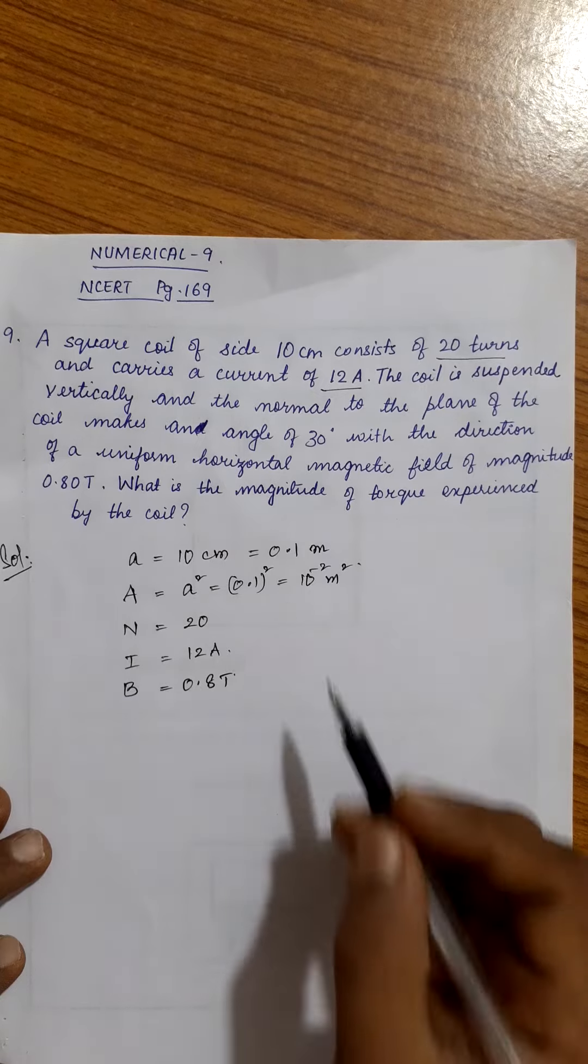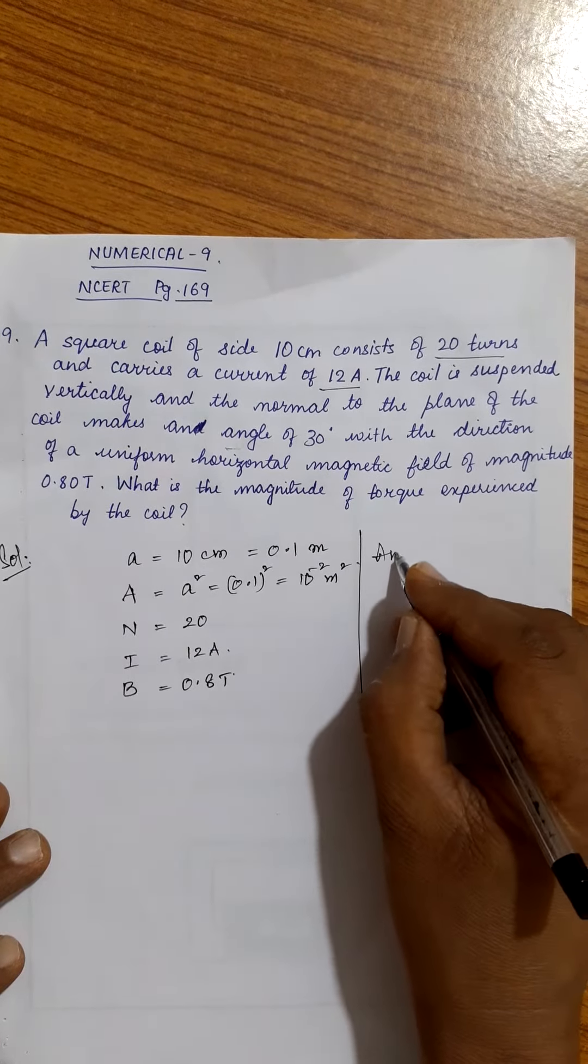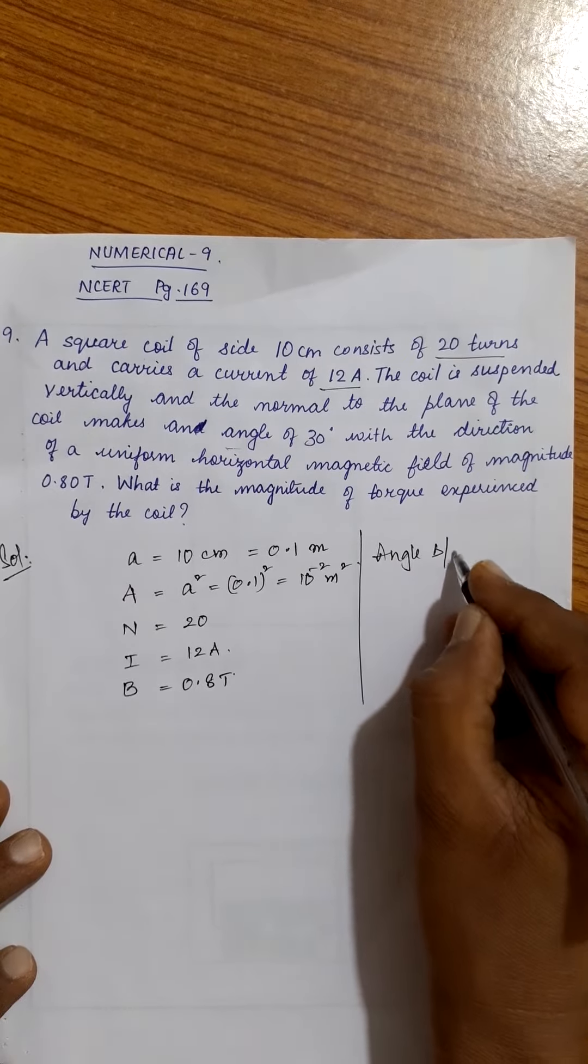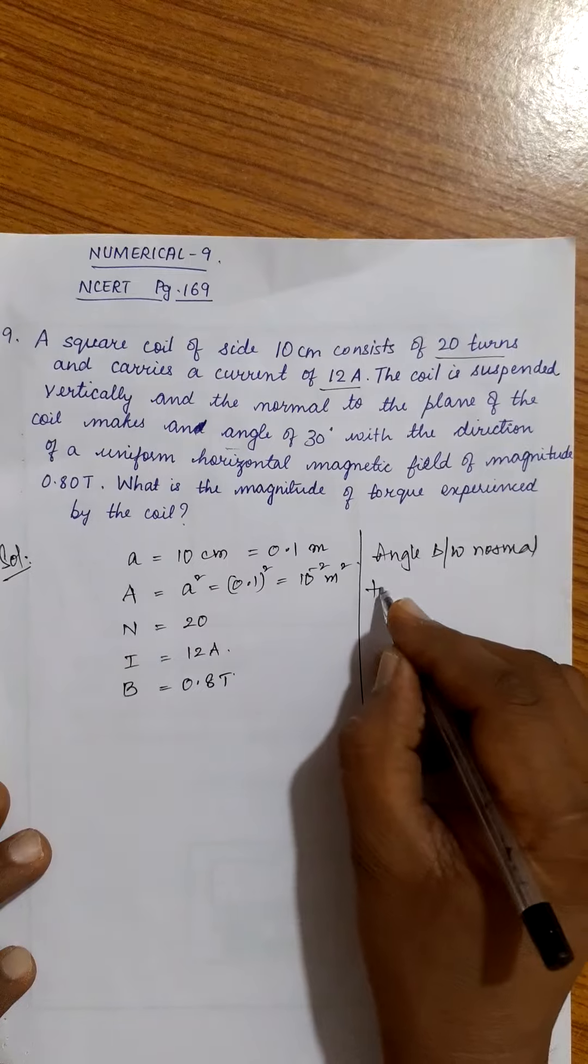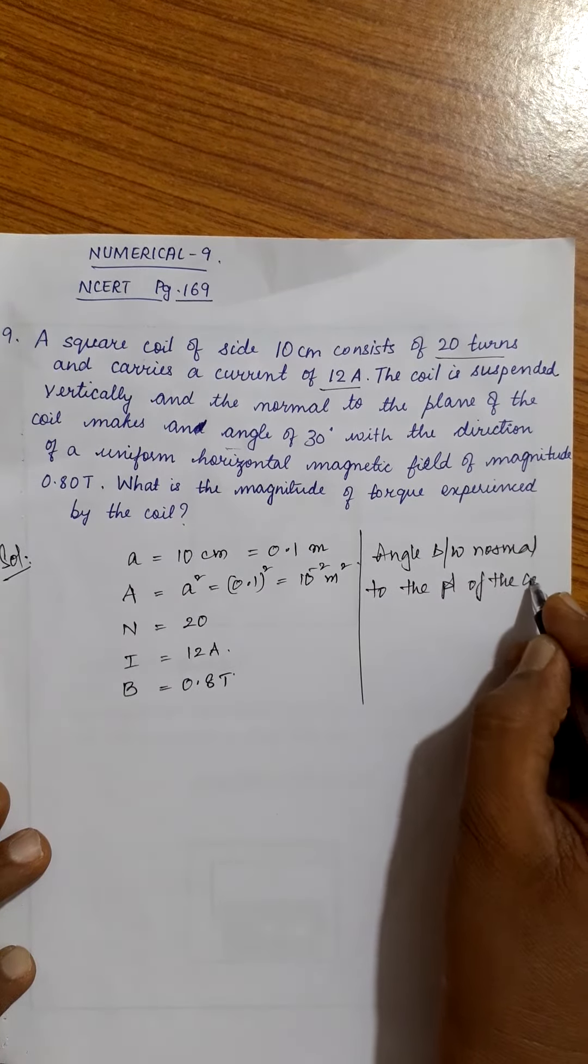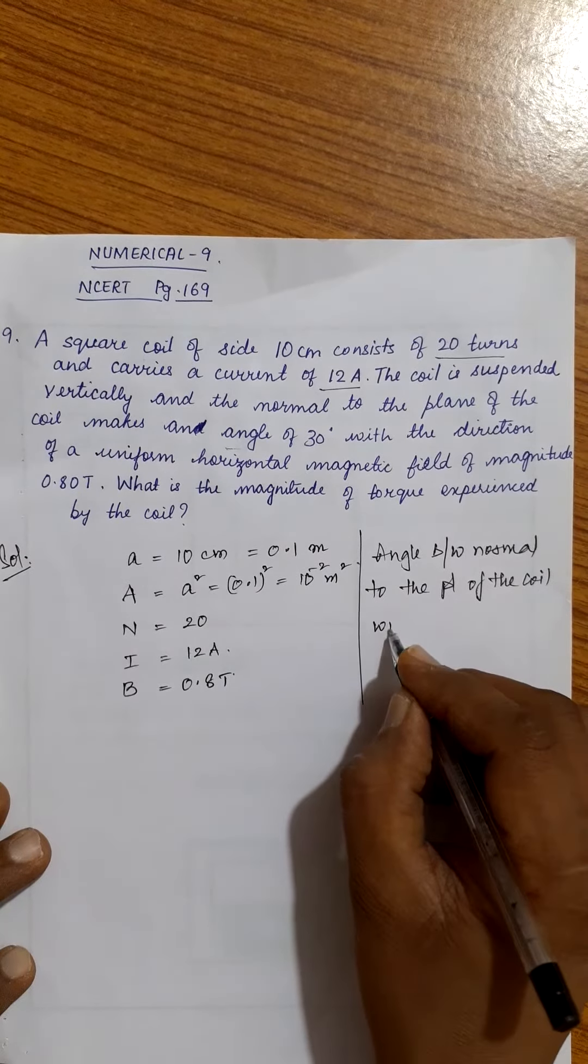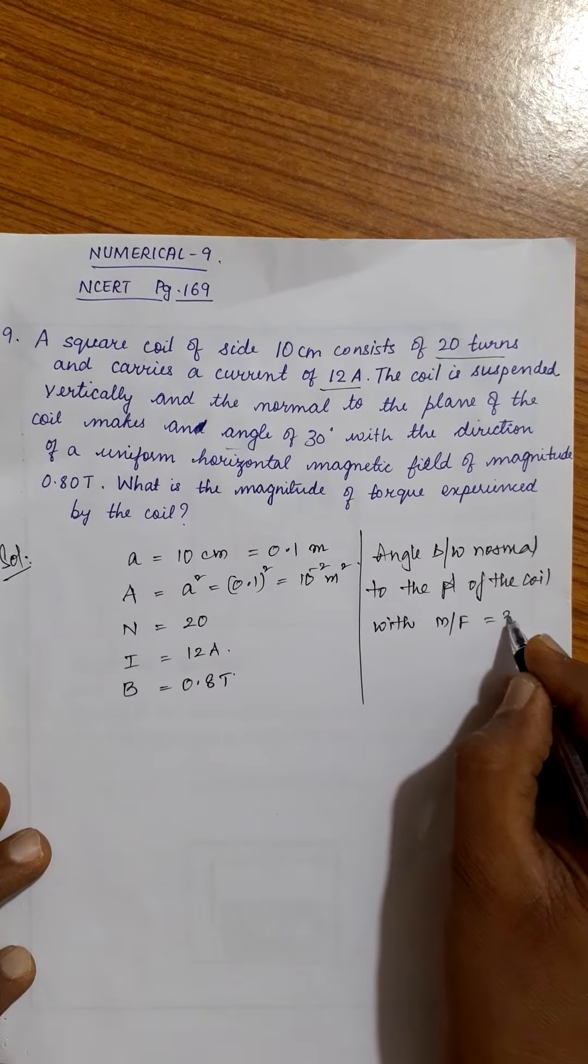The angle is given here. What is given? Angle between normal to the plane of the coil with magnetic field, with magnetic field is given. It is given to you as 30 degree.